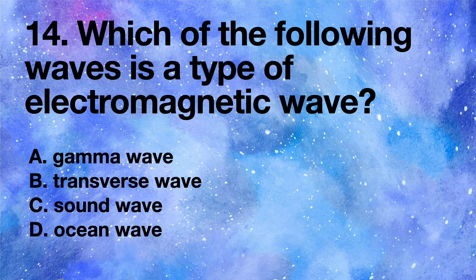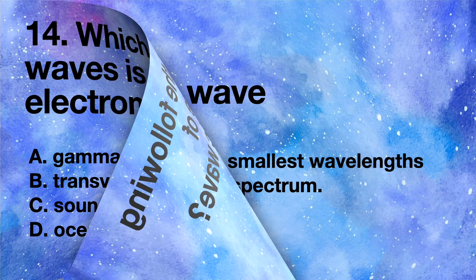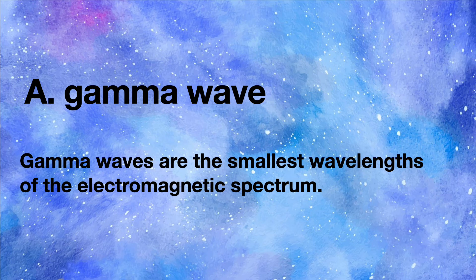Each of the following waves is a type of electromagnetic wave except: A gamma wave, B transverse wave, C sound wave, D ocean wave. Answer: A gamma waves are the smallest wavelengths of the electromagnetic spectrum.